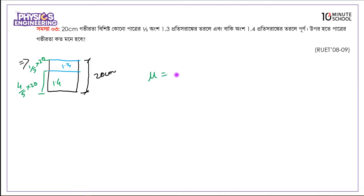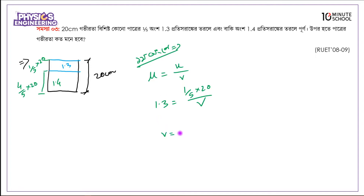The magnification mu equals u divided by v. For position 1.3, the formula gives: one over five times twenty divided by v. Using the first lens: v equals 20 over (5 times 1.3). The result for v1 is 3.08 centimeters.